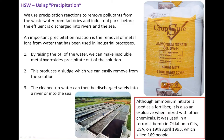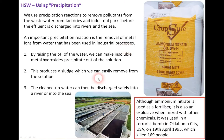Although ammonium nitrate — which contains around 33.5% nitrogen, with both ammoniacal and nitric nitrogen — is used as a fertilizer, it's also an explosive when mixed with other chemicals. It was used in a terrorist bomb in Oklahoma City in 1995, which killed 169 people. So it can be used in bombs as well as for good purposes. This is an example of using precipitation by adjusting the pH of water.